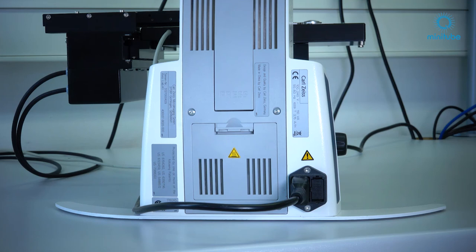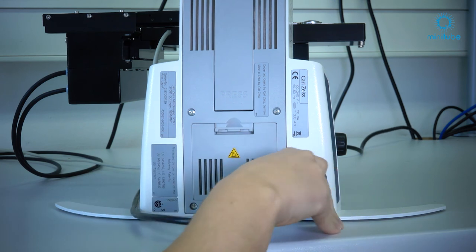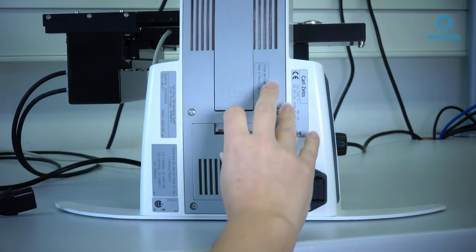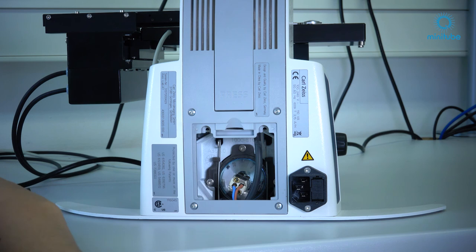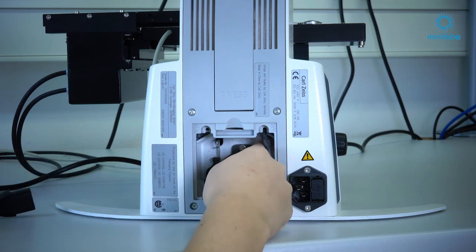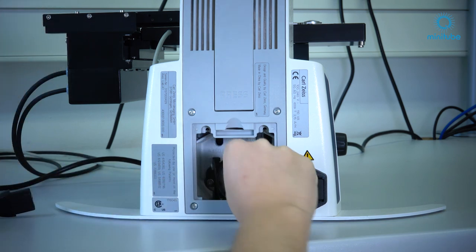To change the lamp in the microscope switch it off and unplug the power cord. Open the cover and remove the lamp by pressing the two metal clips inwards.